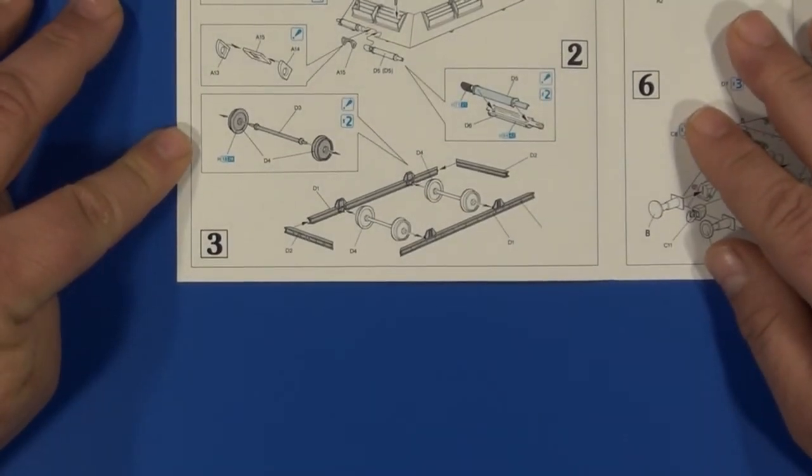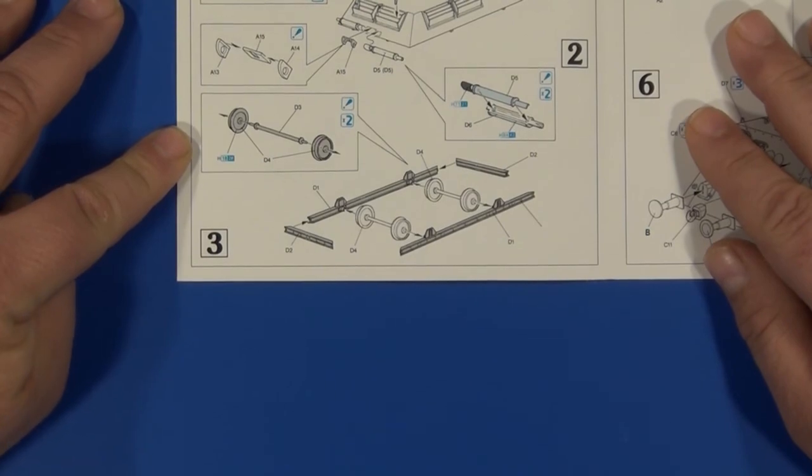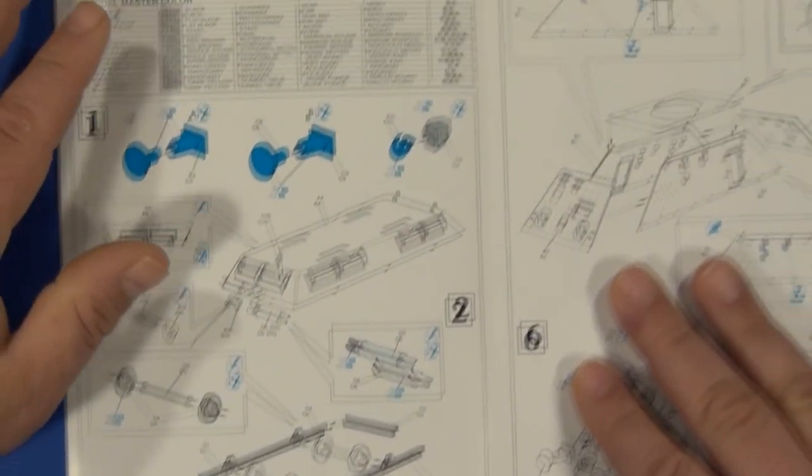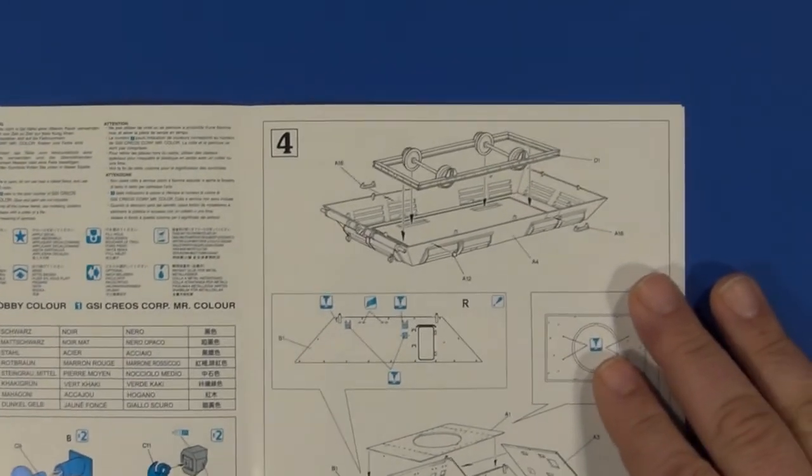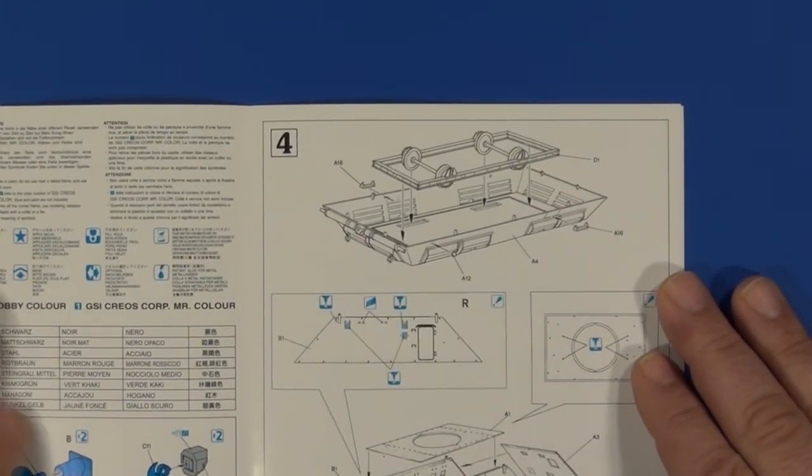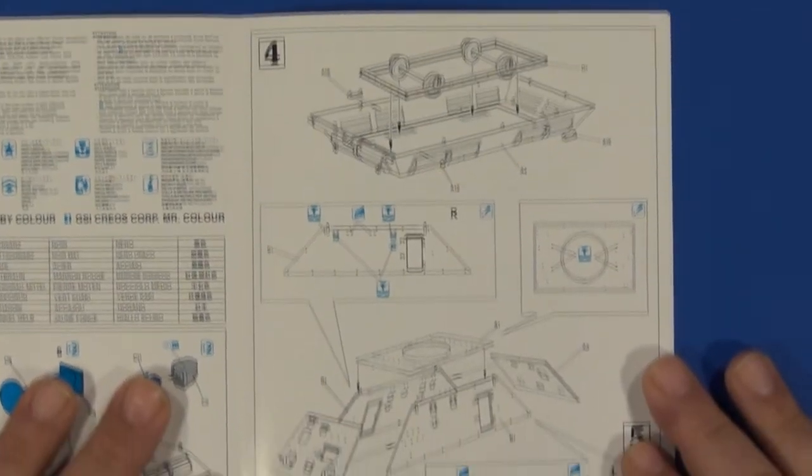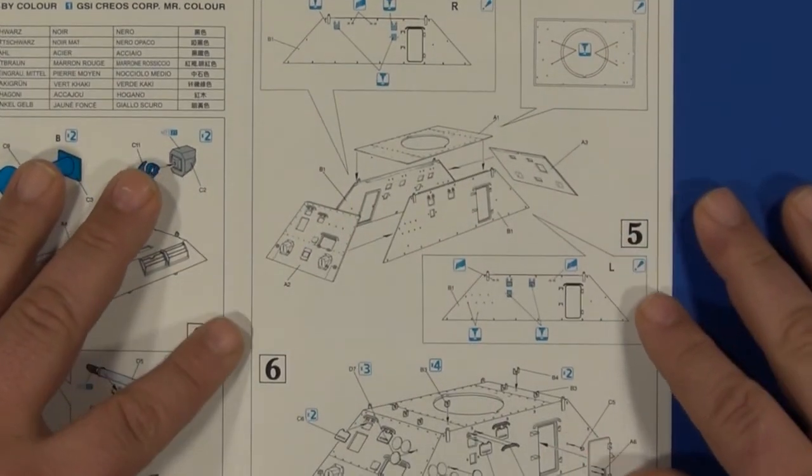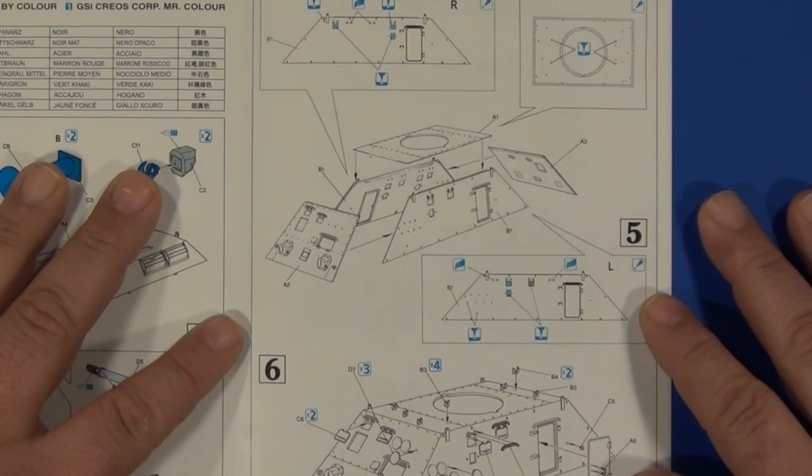Step three: undercarriage assembly. Step four: fitting the undercarriage to the hull. Step five: upper hull assembly.